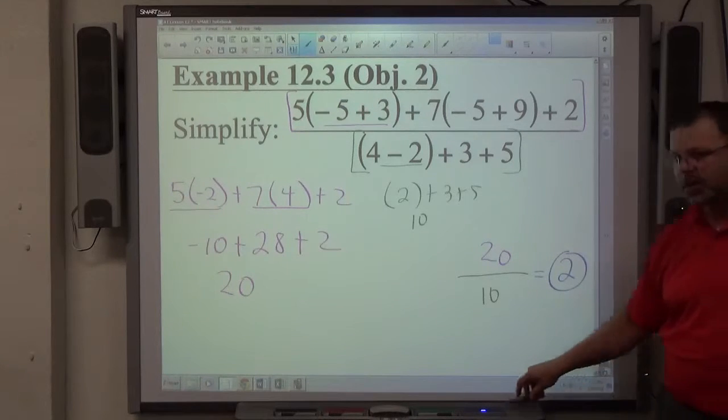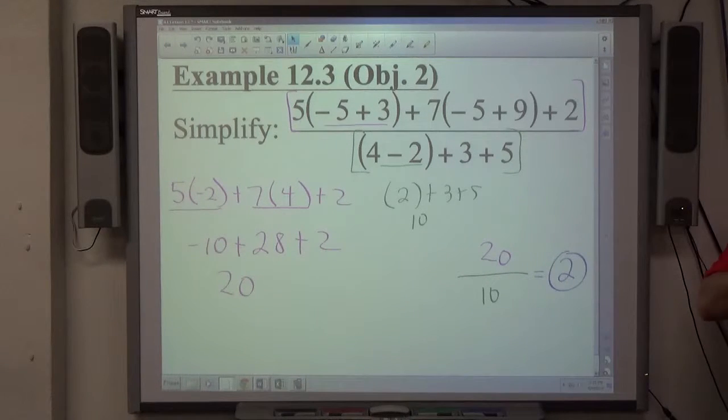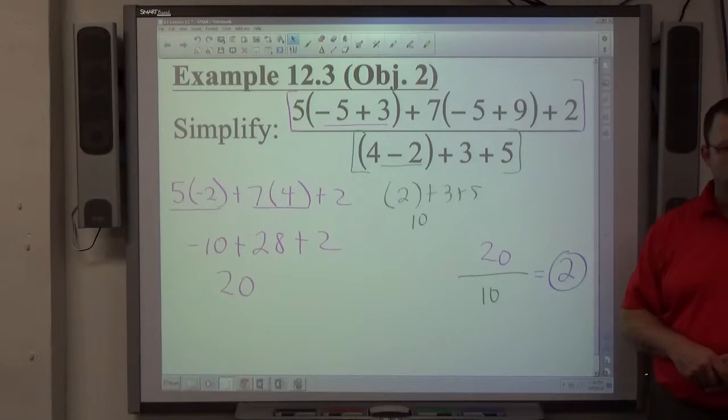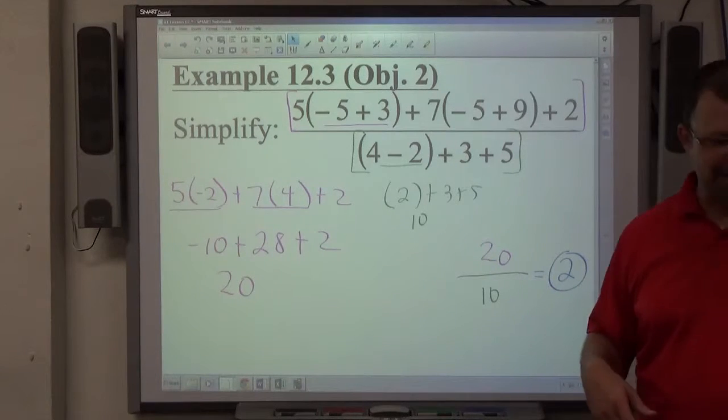You get a whole number, go ahead and write it as a whole number. If you want to put it over 1, that's fine. If all it does is reduce, reduce it. If it's 10 over 20, that's a half. So just make sure that you reduce the fraction properly. If it ends up being a fraction, that's fine. It doesn't have to be, though.